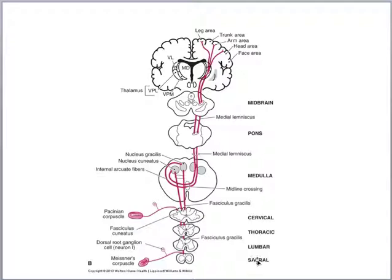Looking at a sacral-to-cervical projection, these tracts ascend in the fasciculus gracilis or cuneatus. They synapse in the caudal medulla onto the nucleus gracilis and the nucleus cuneatus, which give rise to the internal arcuate fibers. They go to the contralateral side in the caudal medulla and ascend as the medial lemniscus. They synapse onto the ventral posterior thalamic nucleus, which then projects these fibers to specific somatic sensory areas within the parietal cortex.